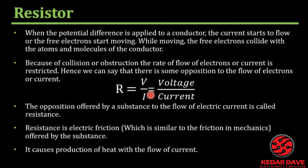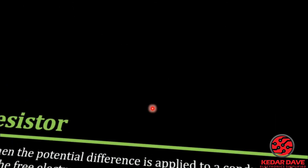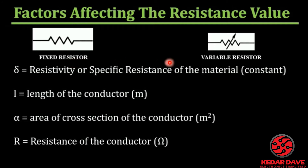The resistor can be defined by the formula R equals voltage divided by current. If we need to find the resistance, it is voltage divided by current. There are two types of resistors: fixed resistor and variable resistor. A fixed resistor offers only one fixed value — it cannot offer more or less than that value.